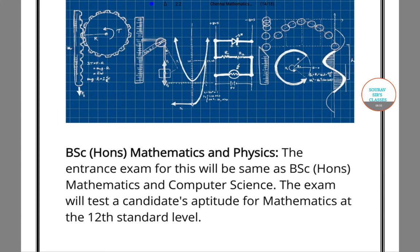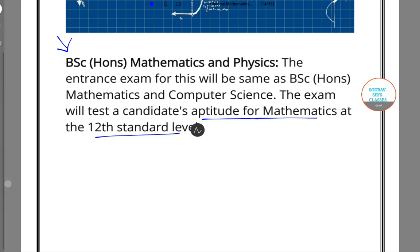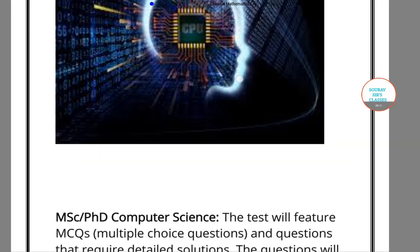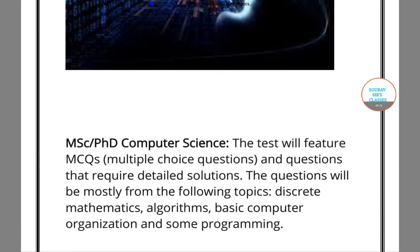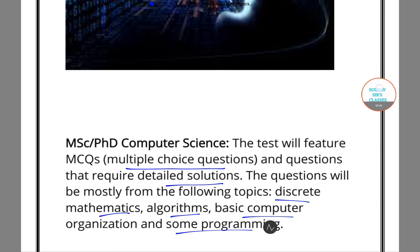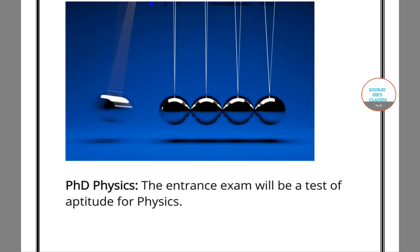For B.Sc. Mathematics and Physics honors, they will test the aptitude for mathematics at the class 12 level, similar to the above. For the PhD program in Computer Science, you get a multiple choice question set and questions that require detailed solutions — two types. Topics include discrete mathematics, basic computer organization, and some programming questions. For PhD in Physics, the entrance exam will test the aptitude for physics.